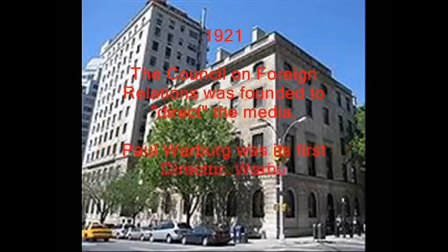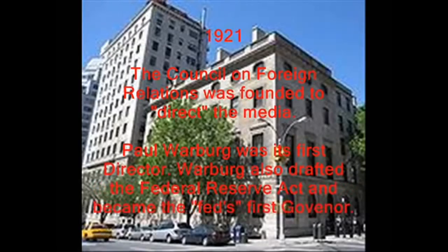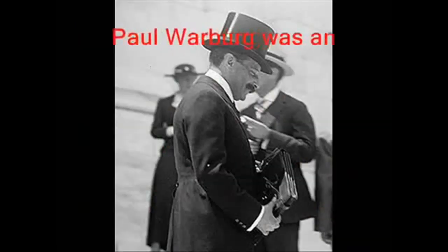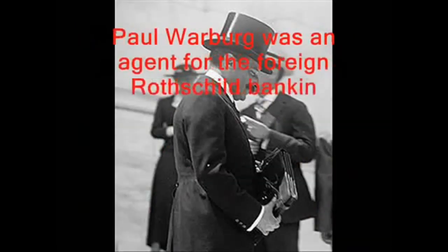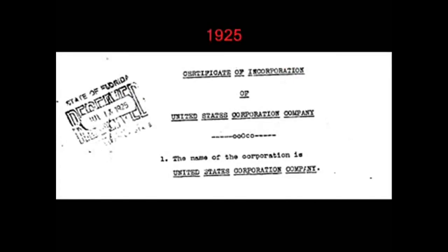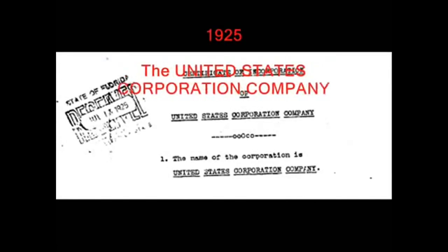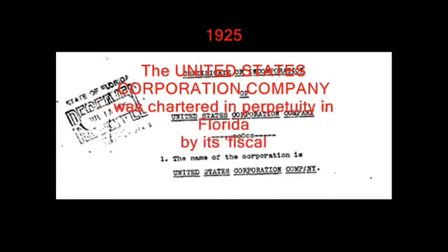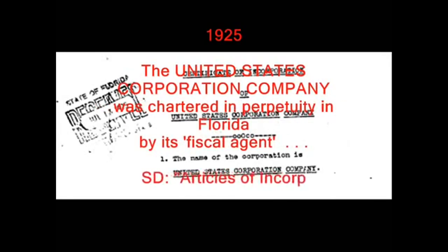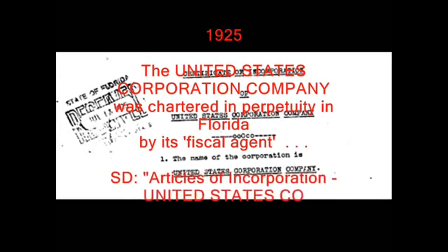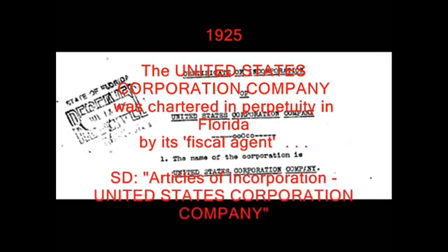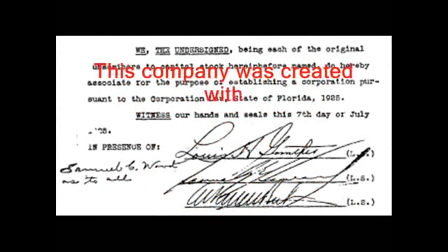1920: Congress handed the U.S. Treasury over to the same private banking cartel via the Independent Treasury Act. Source document: Independent Treasury Act, 1920. 1921: The Council on Foreign Relations was founded to direct the media. Paul Warburg was its first director. Warburg also drafted the Federal Reserve Act and became the Fed's first governor. Paul Warburg was an agent for the Rothschild banking dynasty.